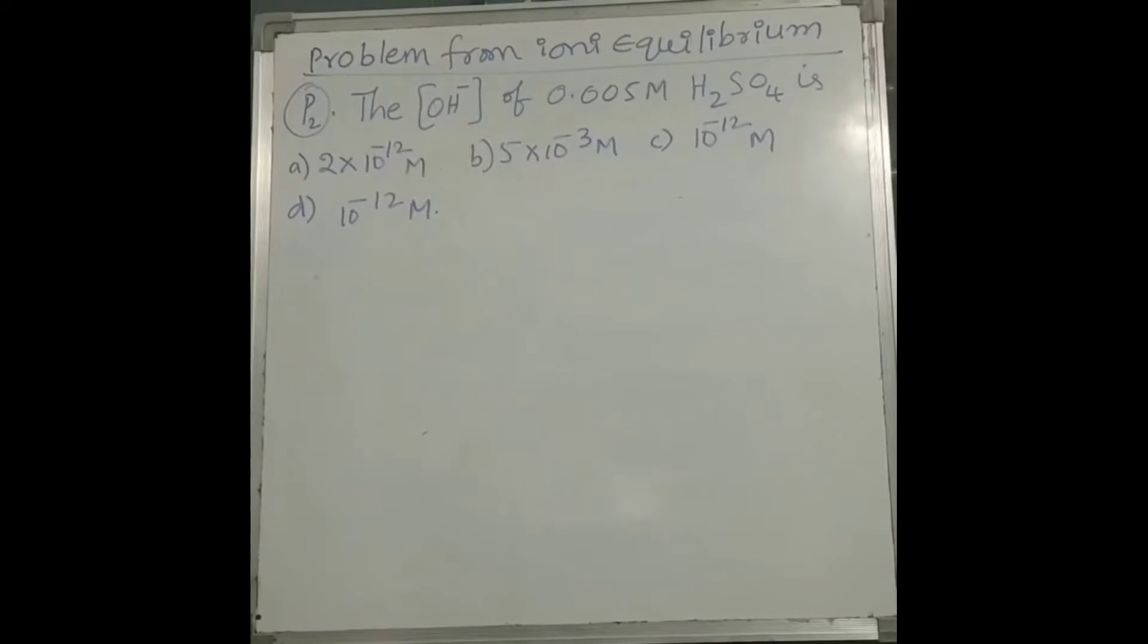The OH- concentration of 0.005M H2SO4 is - there are four options given, so which one is right? Okay, try to solve it.